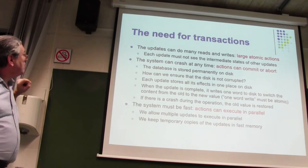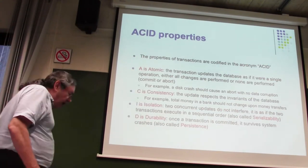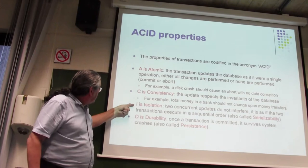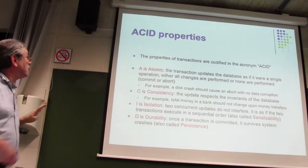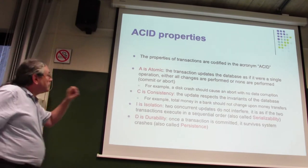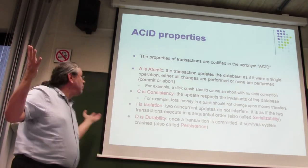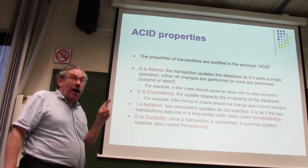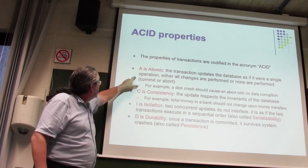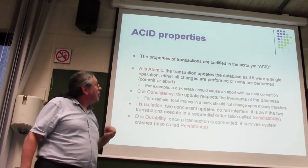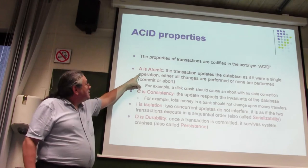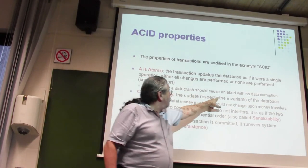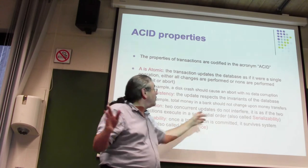There is an acronym: transactions have the ACID property — A-C-I-D — which combines four important properties. A is for atomic: it's either all or none, no intermediate state is visible. A disk crash will be an abort, so you see no changes and there's no corruption.